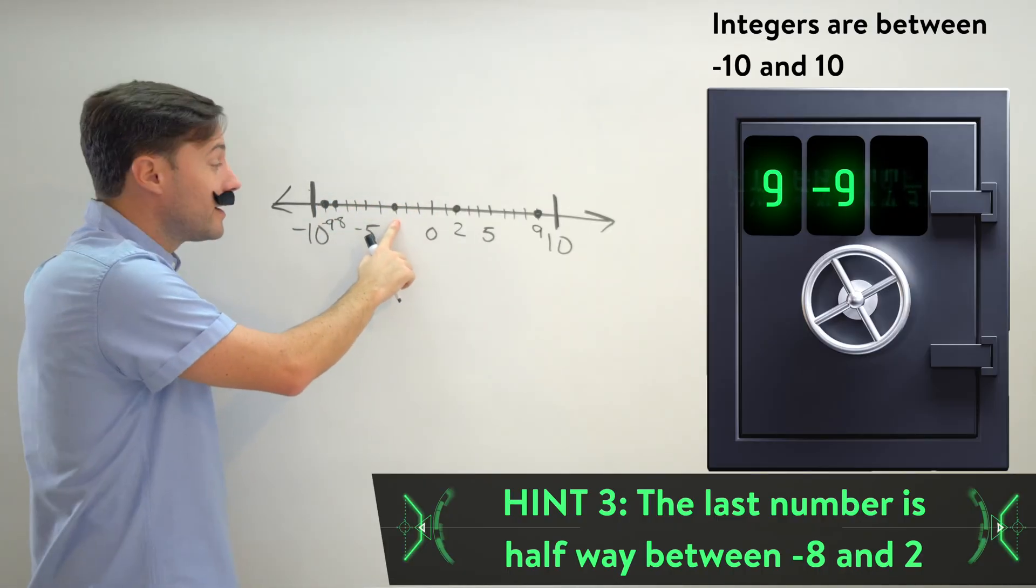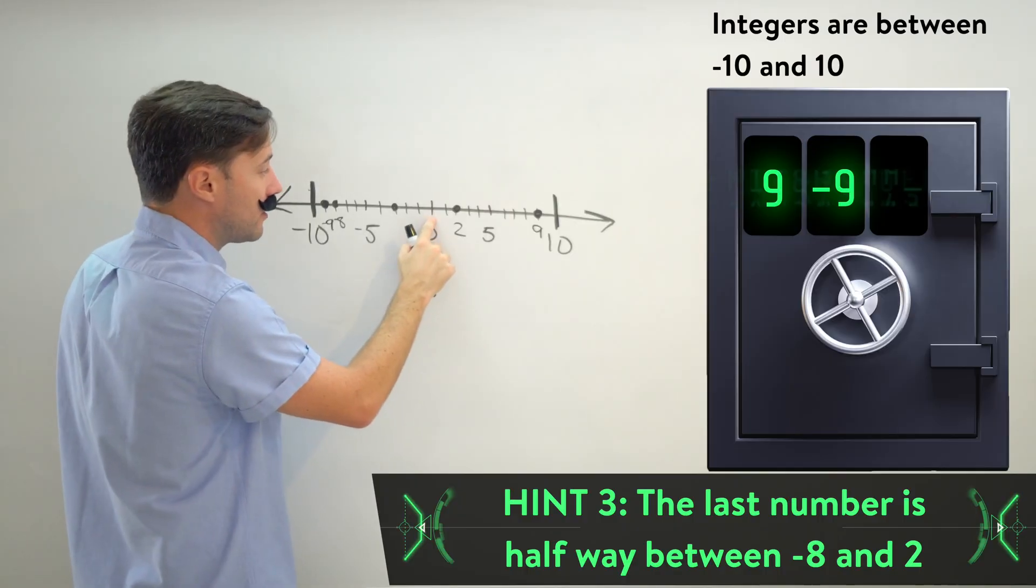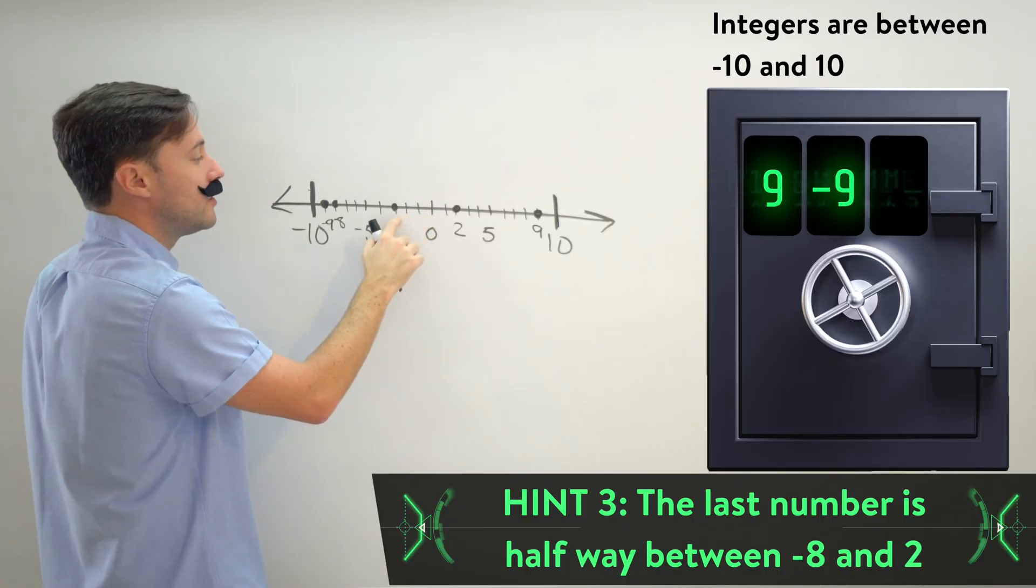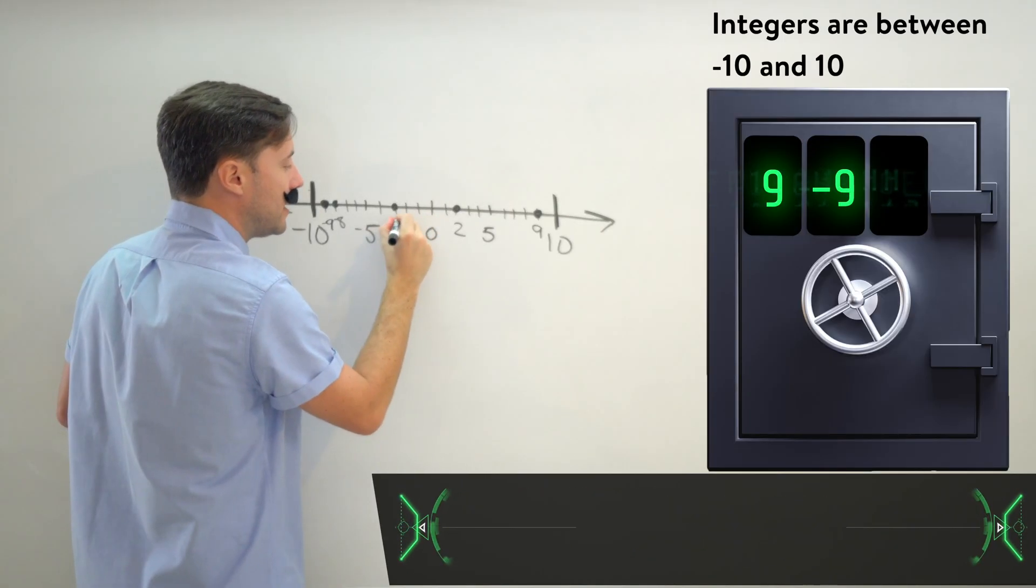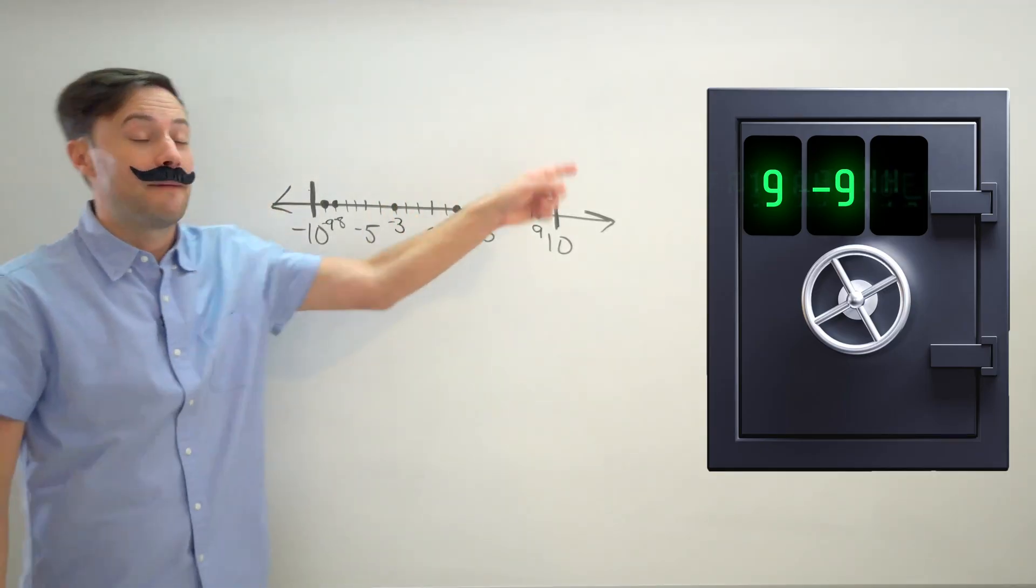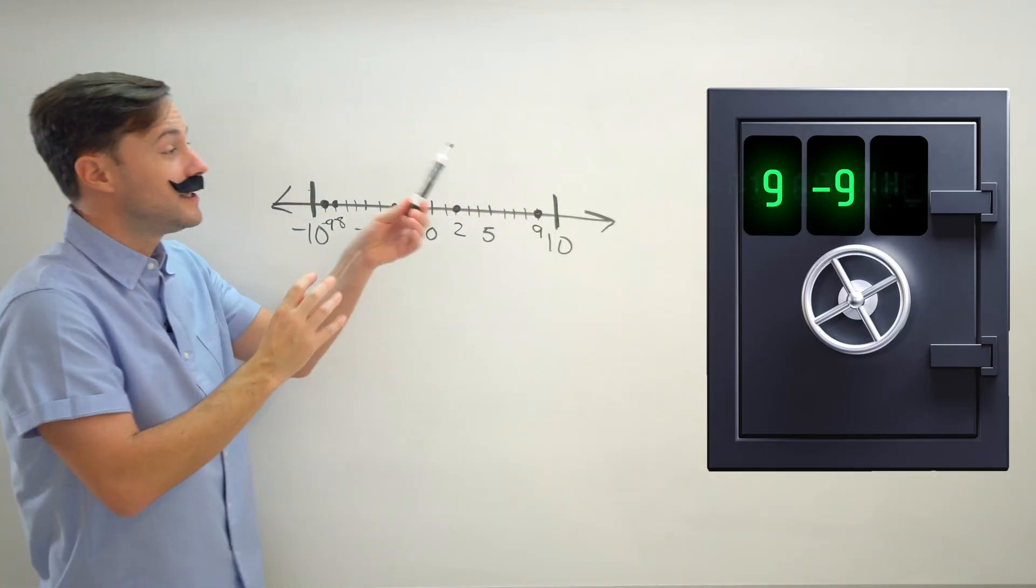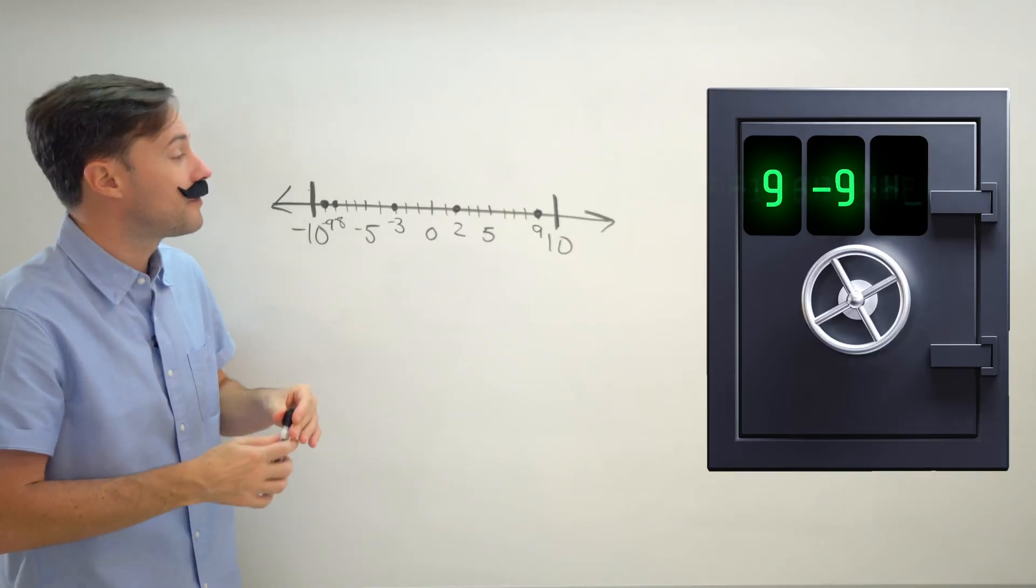And the question is where is that? Well, if this is zero, that would be negative one, negative two, negative three. That means our third digit in the combination should be negative three.